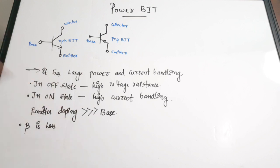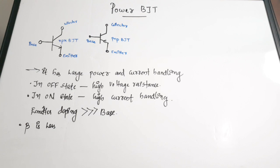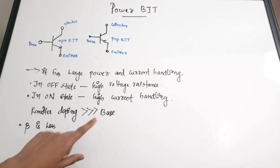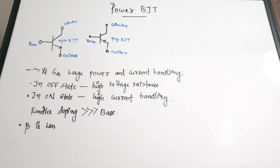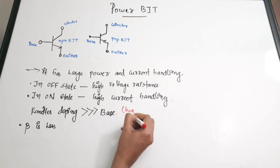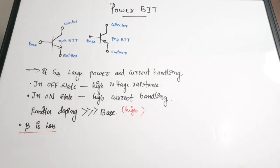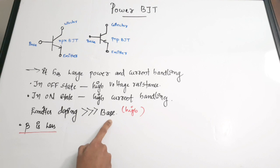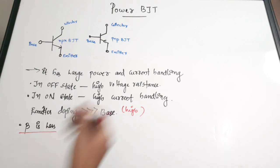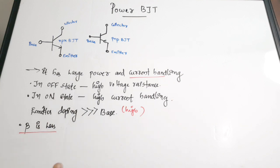The BJT - that is, bipolar junction transistor - when it is in the off state, it has high voltage resistance, and in the on state it has high current handling capacity. Another important feature is that the emitter is doped very much larger than that of the base, due to which it has high gain. The current gain beta is less because of this emitter doping being much greater than the base doping. Also, due to this high current handling capability, it is protected with the help of a large metal body.